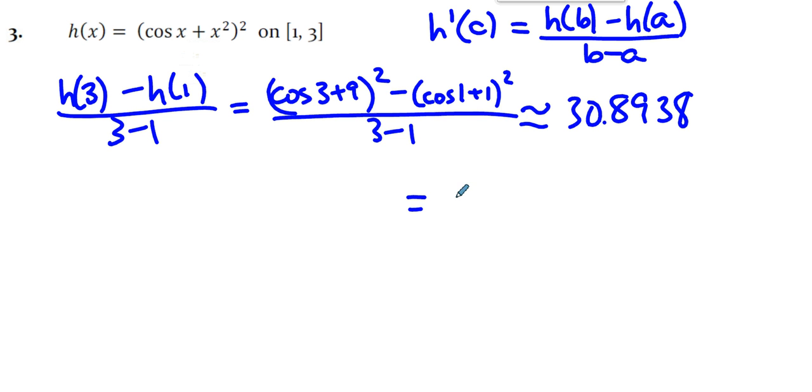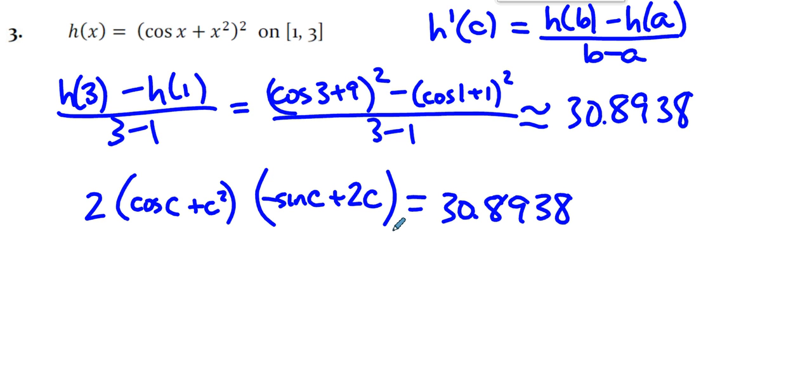So what do we do? What do we set equal to 30.8938? Well, we set the derivative equal to that. How do you find the derivative? Well, it's something squared, so we do 2 times the something to the first times the derivative of that something. And the derivative of that something is negative sine plus 2 times the variable.